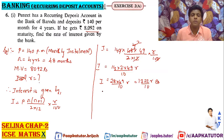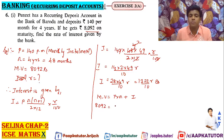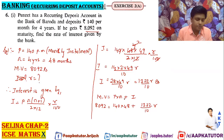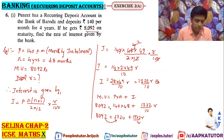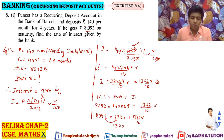So I is equal to 28 × 49 / 10 × r. Now 28 × 49 = 1372. So I = 1372r / 10 rupees. Now the maturity value is given by P × n + I. Maturity value is 8092. P is 140, n is 48, and I is 1372r/10. So 140 × 48 = 6720. Therefore 8092 = 6720 + 1372r/10.